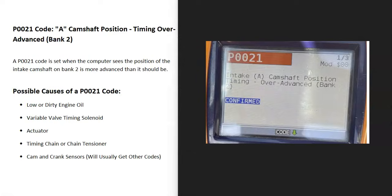Today I'm talking about a P0021 code — what it is and how you go about fixing it. A P0021 code is an 'A Camshaft Position Timing Over-Advanced Bank 2' code.